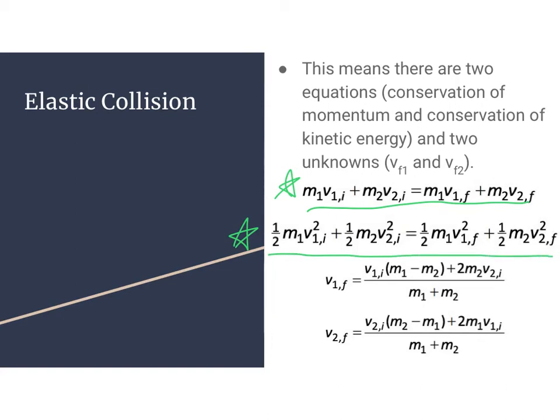And so using these two equations, you can work through and derive equations for the final velocities of the two objects. And so this equation here is our final velocity of the first object. This equation here is the final velocity of the second object. Again, not something you specifically need to do, but just understand that it can be done. And really the idea here, the big takeaway here, is that in an elastic collision, both the kinetic energy and the momentum are conserved.